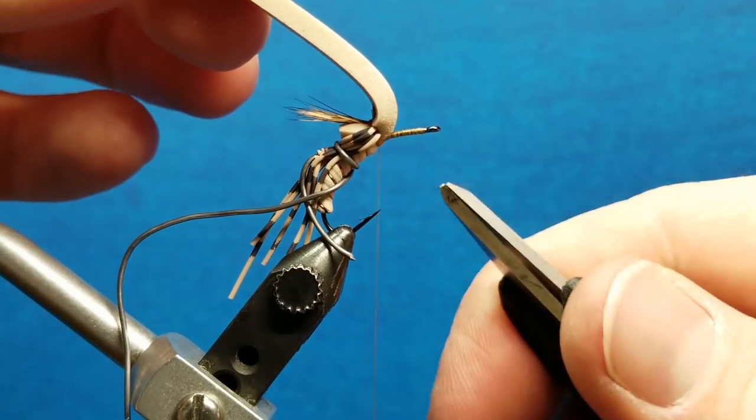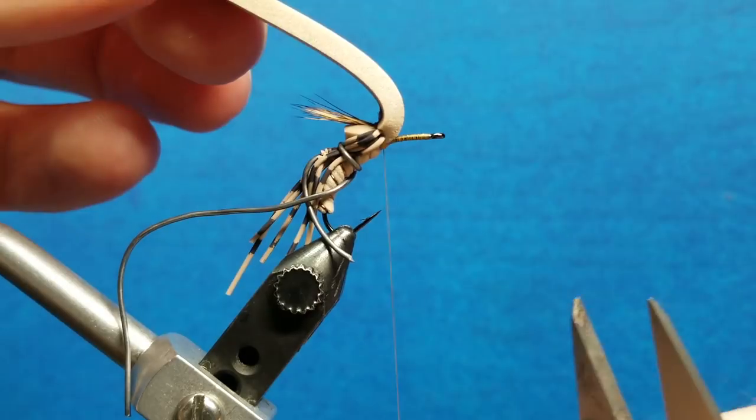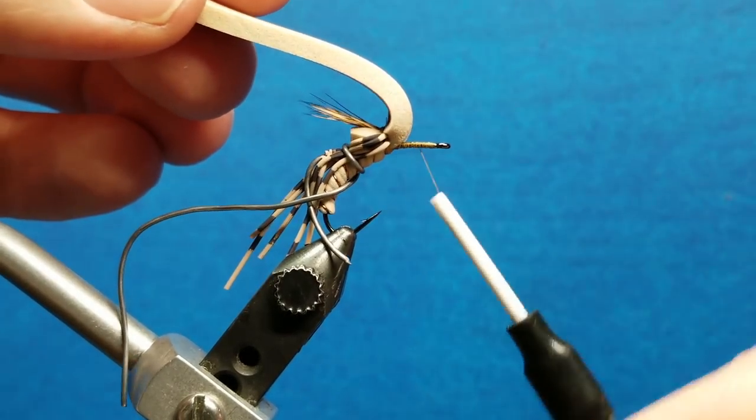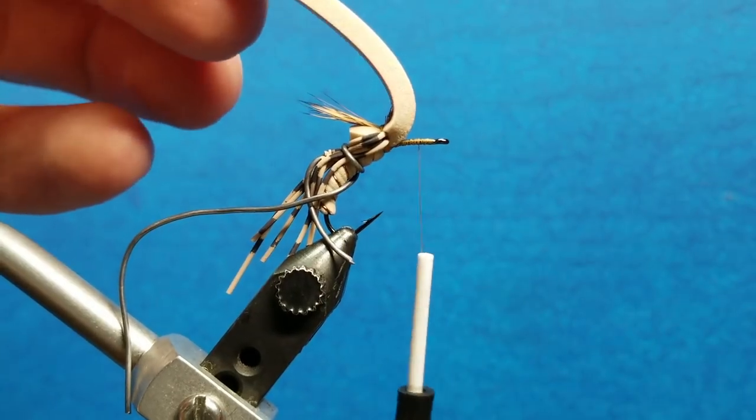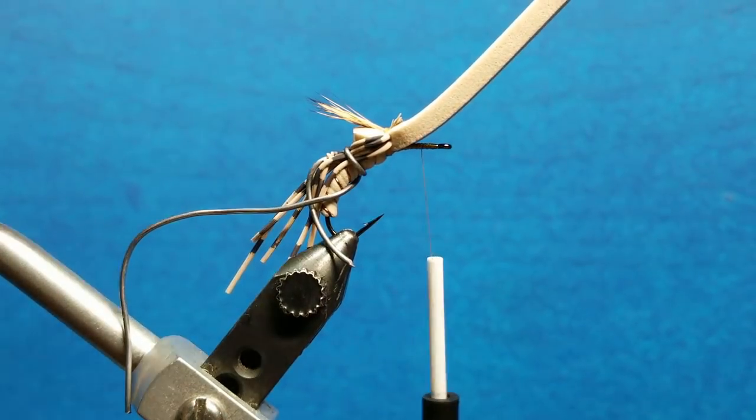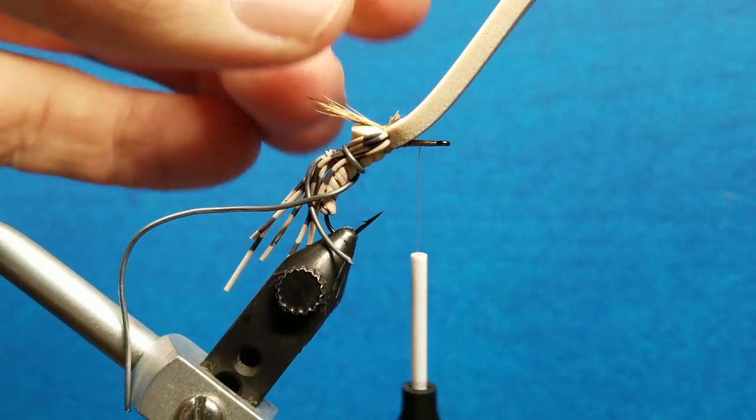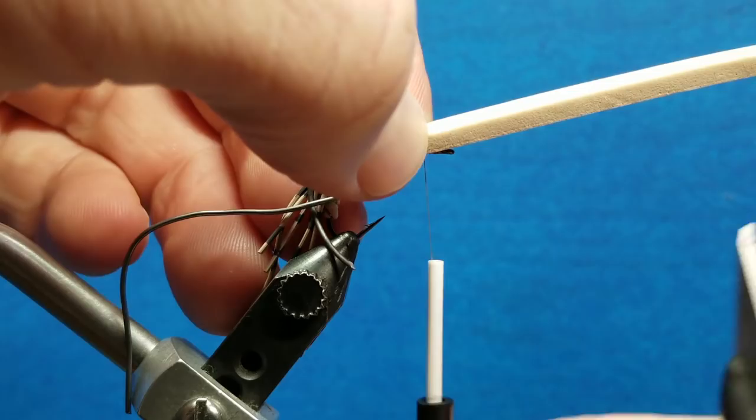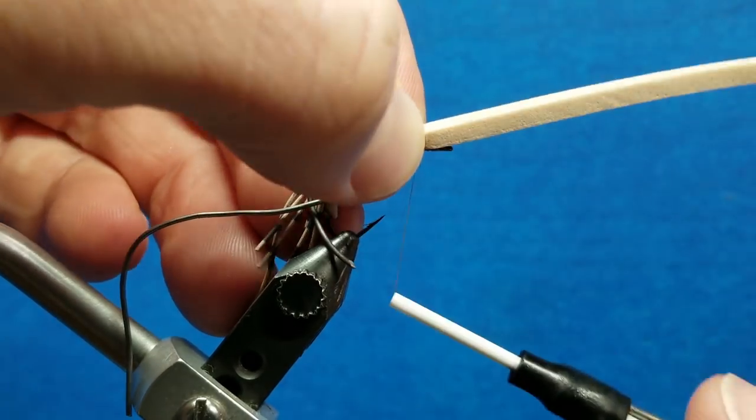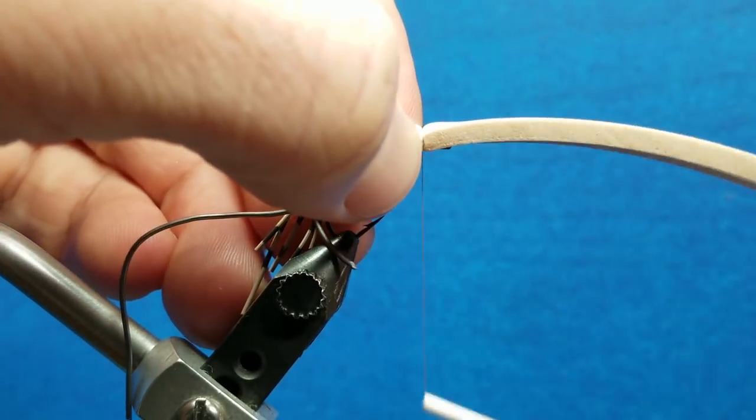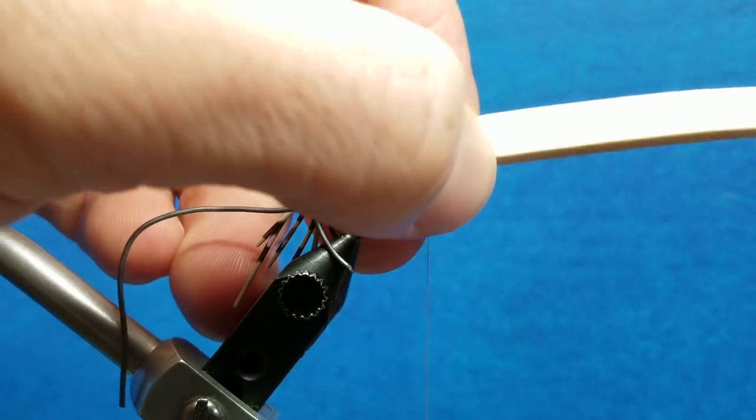So when you look at what's left of our hook here, I'm going to split this difference. I'm going to take my thread about halfway there. Let it hang. And then as before, I'm going to take just a little bit of zap-a-gap. Touch the shank with it. We're going to repeat our cinch and pinch process here. So give it a good pinch. Half dozen wraps maybe.